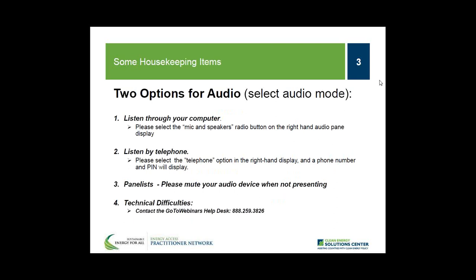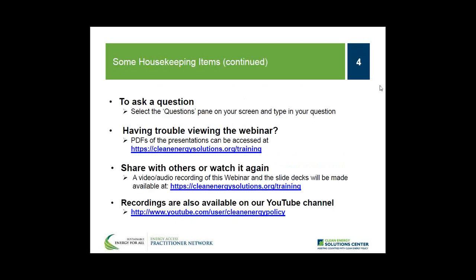You have two options for audio today: listen through your computer or over your telephone. If you choose to listen through your computer, select the mic and speakers option in the audio pane to eliminate feedback and echo. If you dial in by phone, select the telephone option and a box will display the telephone number and audio pin. The help line number is 888-259-3826.